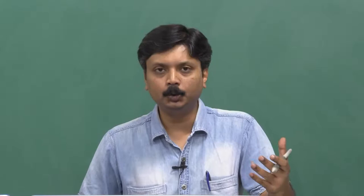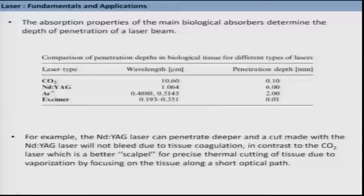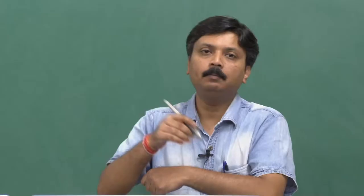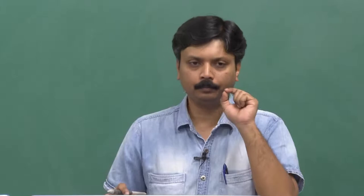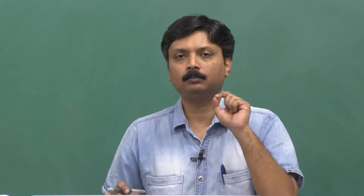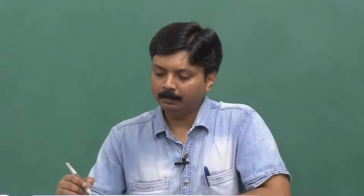If one wants to use the absorption property of these components within biological tissue, one can selectively choose the wavelength by selectively choosing a particular laser. Some other properties are also given in this slide, showing the particular wavelengths normally used — for example, carbon dioxide laser, Nd:YAG laser, argon ion laser, and excimer laser. A very important parameter is penetration depth — how deep below a surface laser light is present. Values of penetration depth for those laser lights are given in this table.